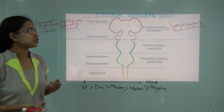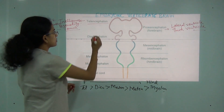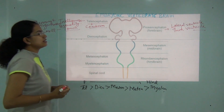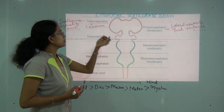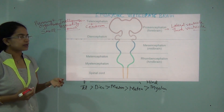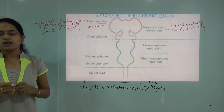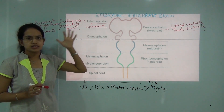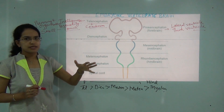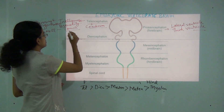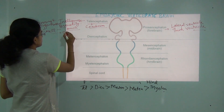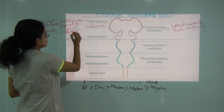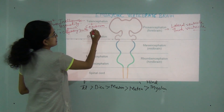In the adult brain, telencephalon forms the cerebrum. What it includes is the cerebral cortex and the cerebral region, then the basal ganglia region, and the olfactory bulbs — responsible for the sense of smell.